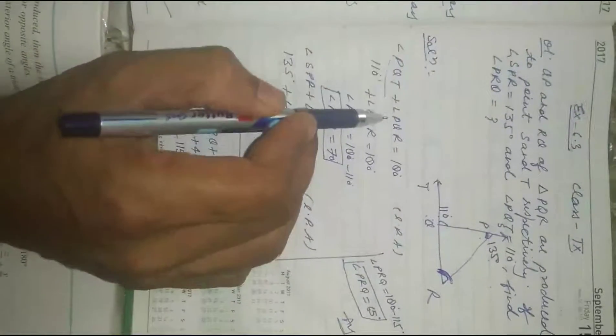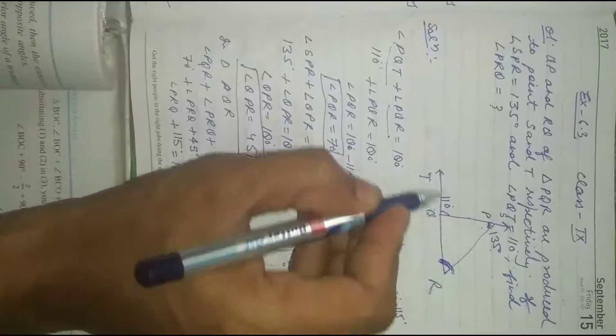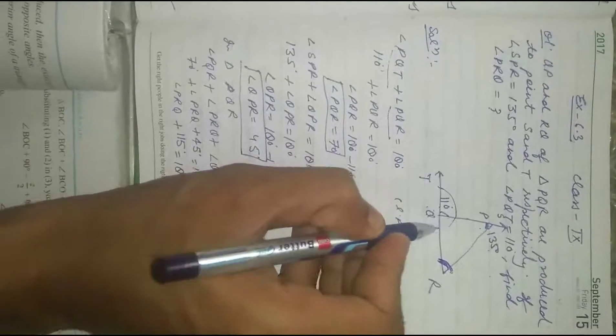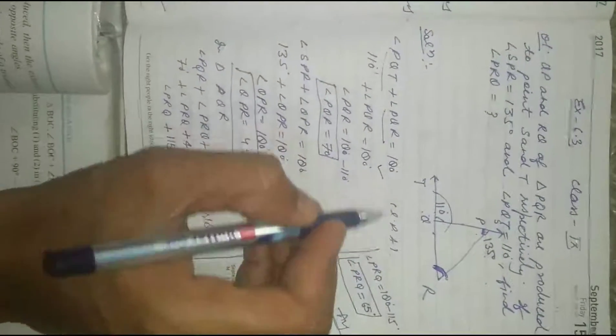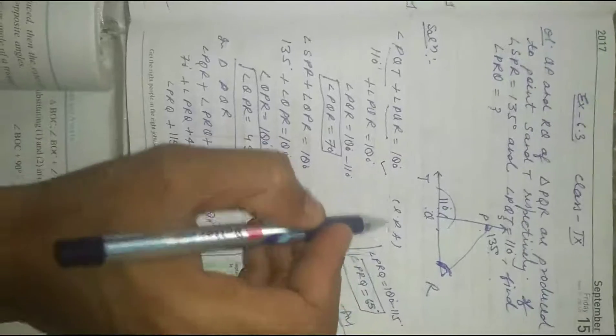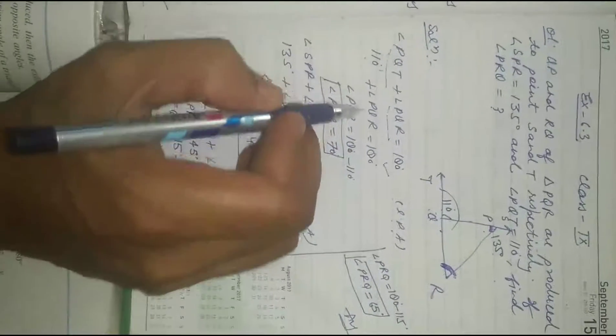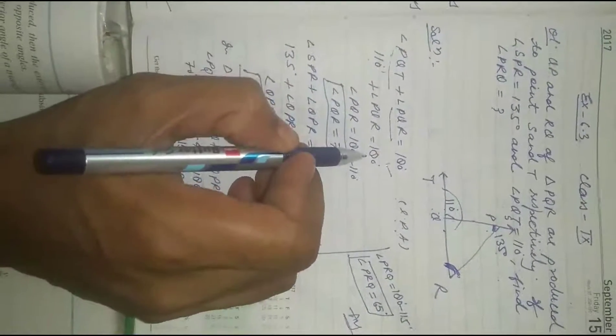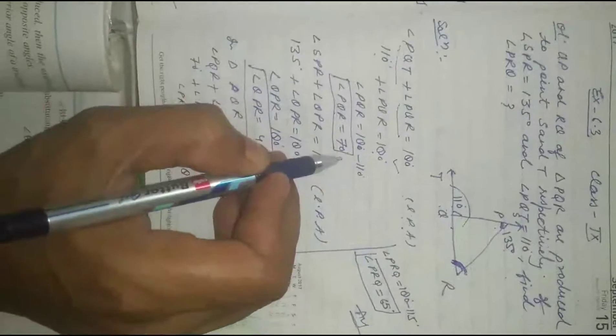Angle PQT plus angle PQR equals 180 degrees. Why? Both angles are linear pair. So PQT is 110 plus PQR equals 180, therefore angle PQR equals 70 degrees.